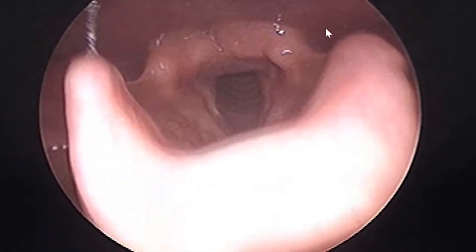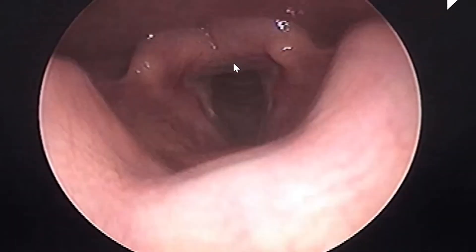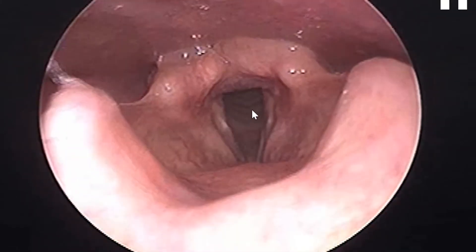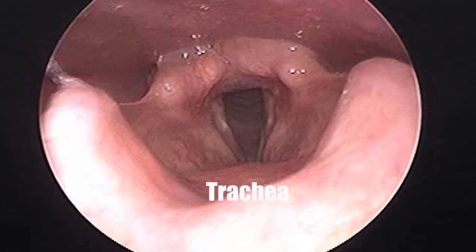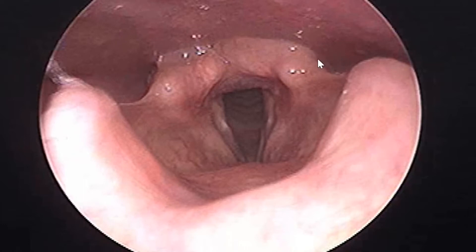Now you will see that once the vocal cords open fully, the pyriform sinuses — the food inlet — close. You can see through the open vocal cords into the trachea, which is the windpipe. The trachea is always open, lined by C-shaped cartilage, as you can appreciate. These are the cuneiform cartilages, the aryepiglottic folds, and the pyriform sinuses, which are now kind of closed.